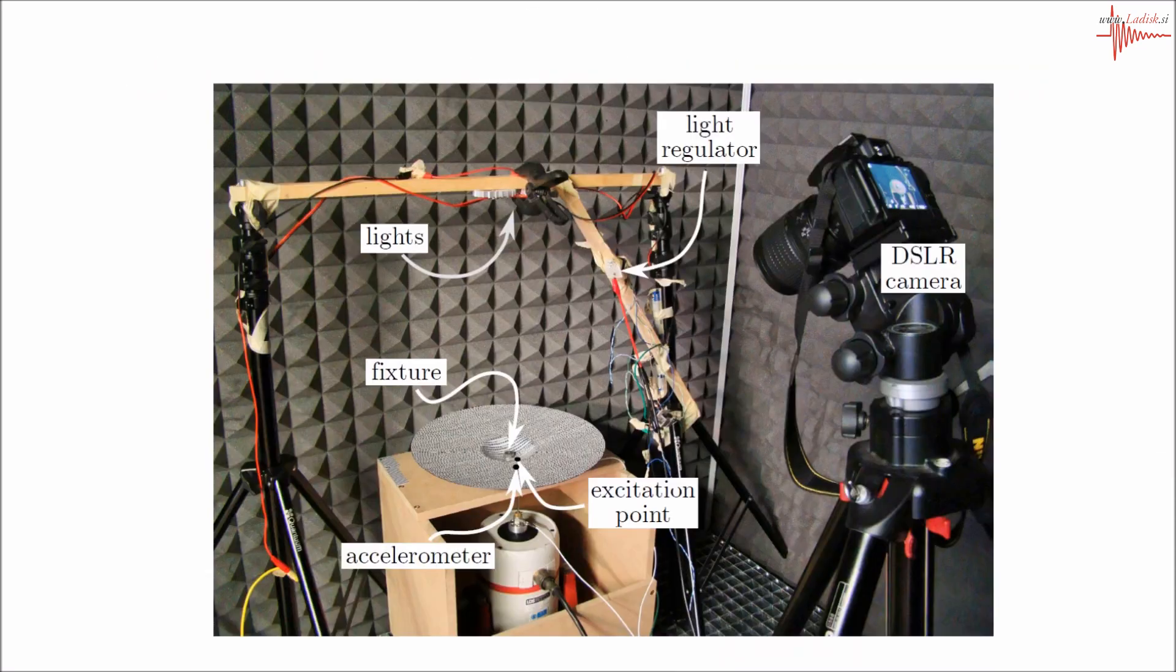This is an example of a SOFI measurement on a cymbal. On top are the lights, which are regulated in a feedback loop to produce the harmonically varying illumination.